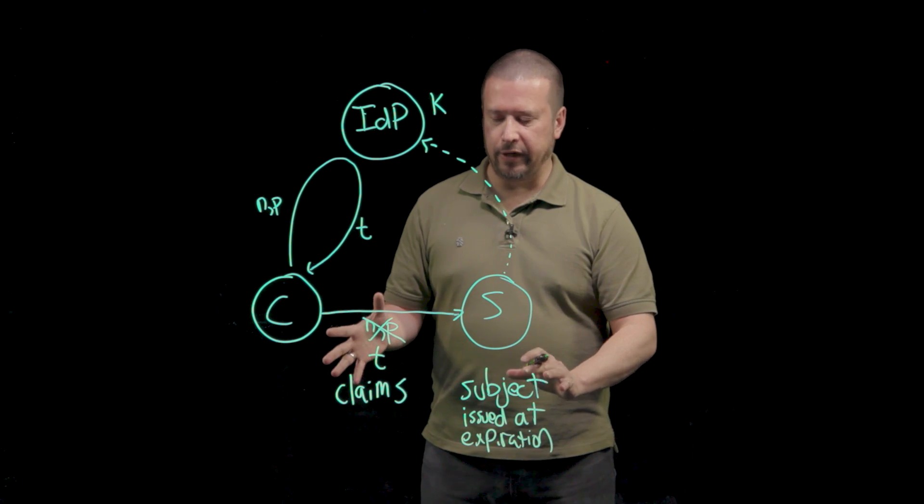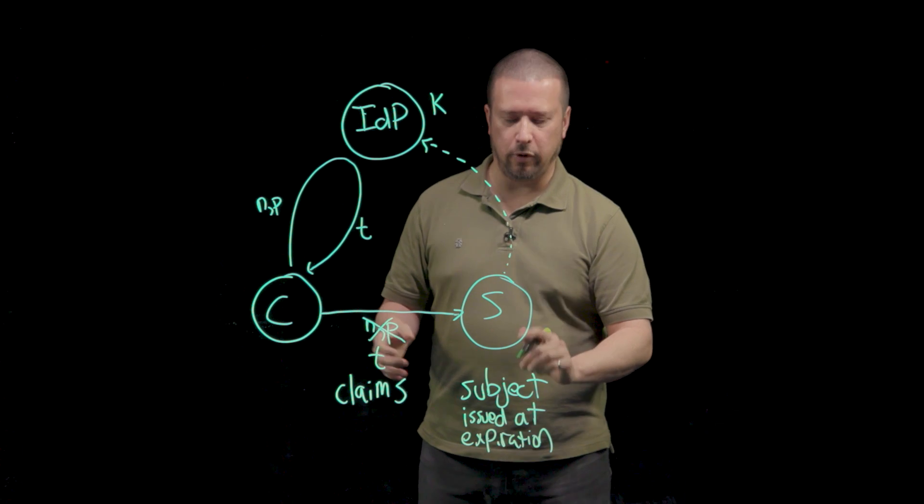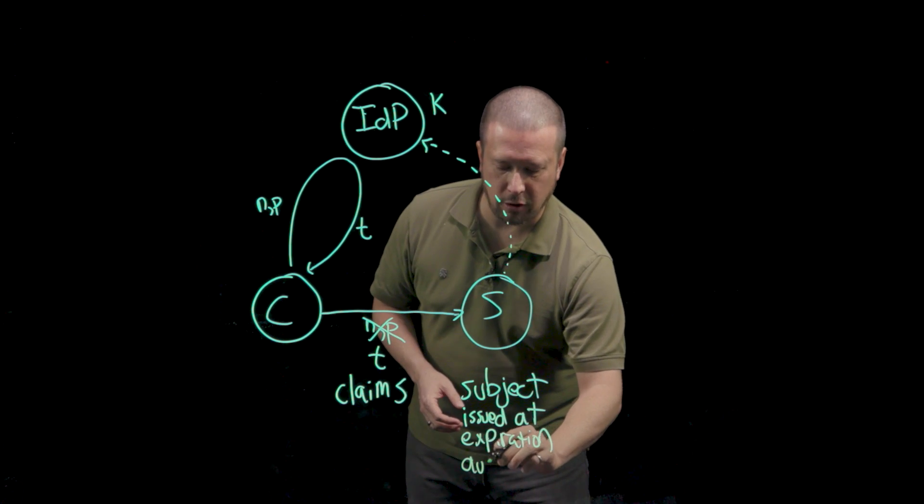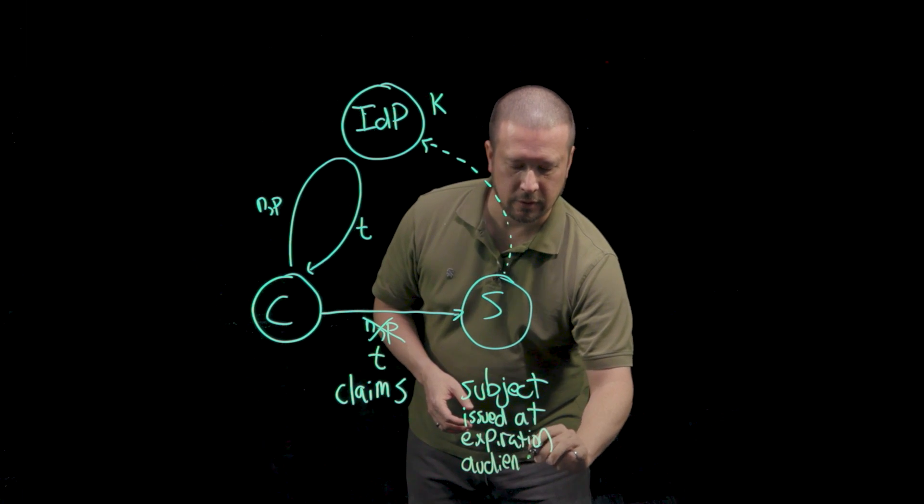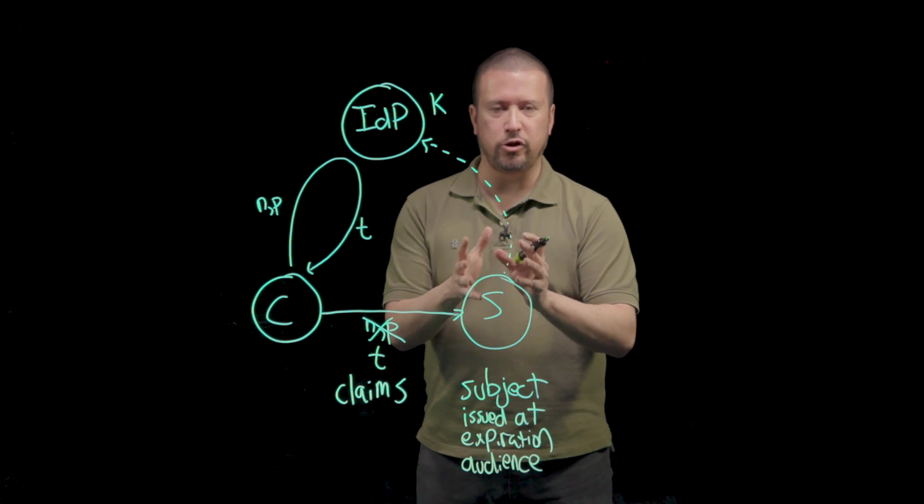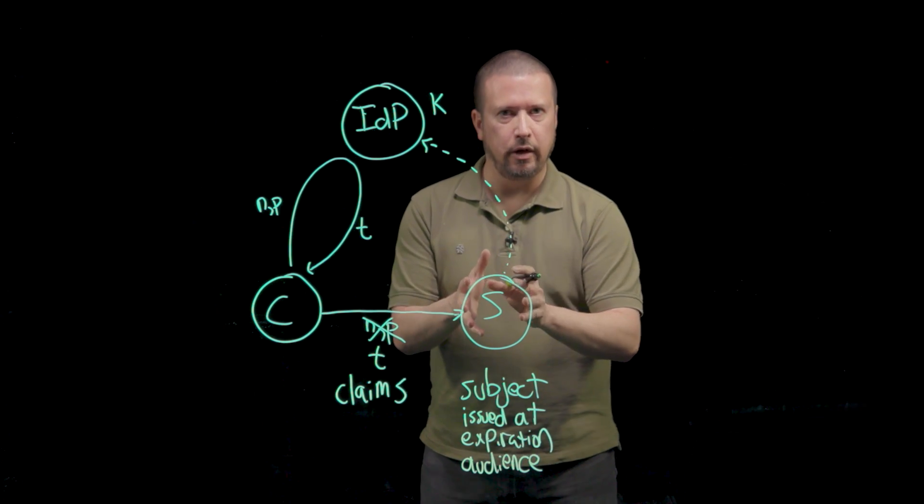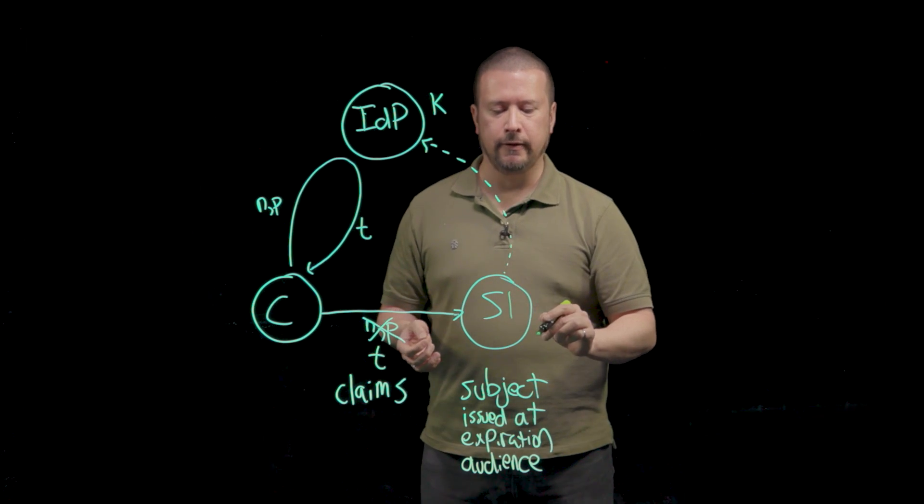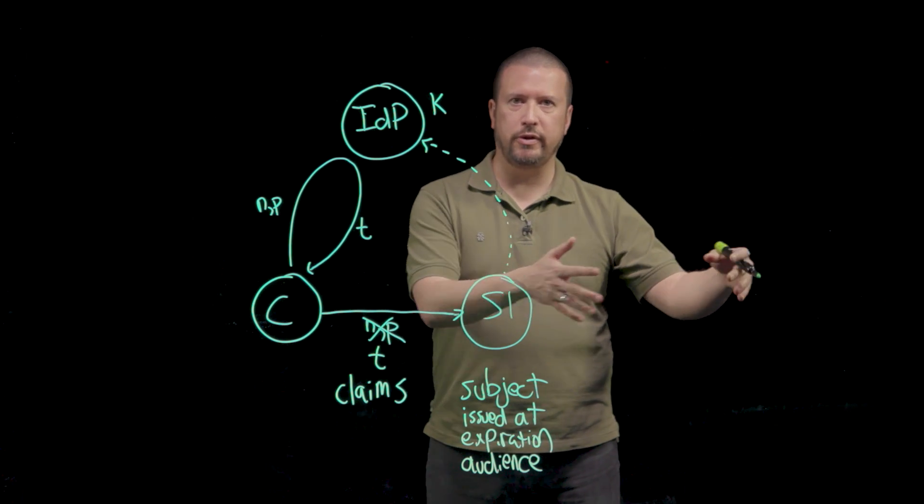There's one more claim that is found in most tokens that's really important to understand. And it's a thing called the audience. The audience claim tells this server that this token is for it and not some other server. Like let's say this is server one, but there's also a server two, server three, server N in the environment.